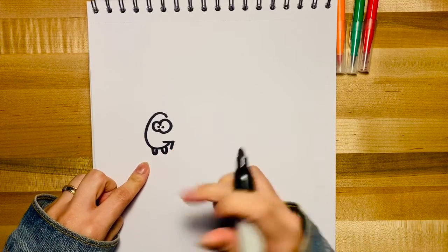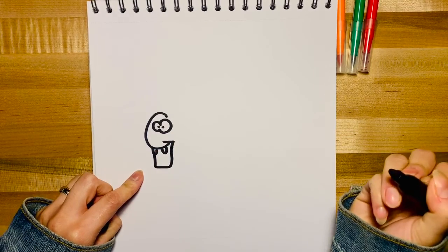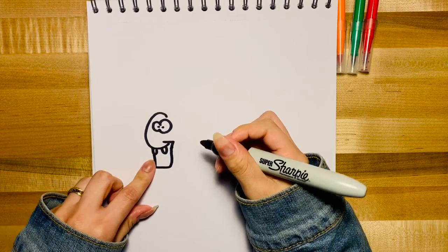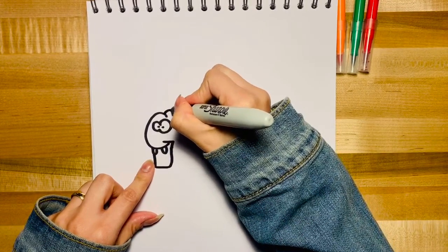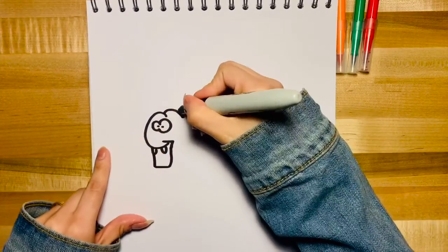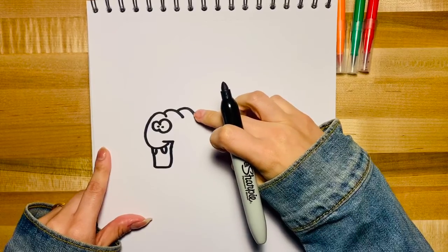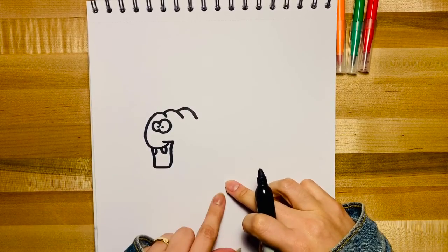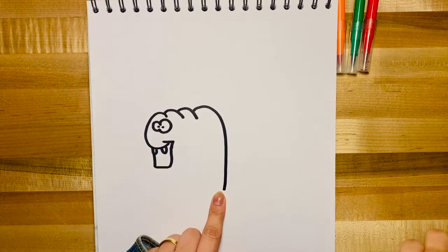Now we're going to give him a mouth and next we're going to draw a little hump right here. I'm going to do one more and then we're going to bring his back all the way down to about here. There we go.